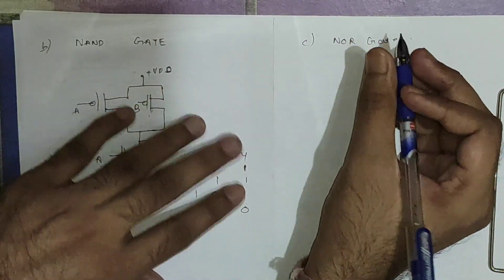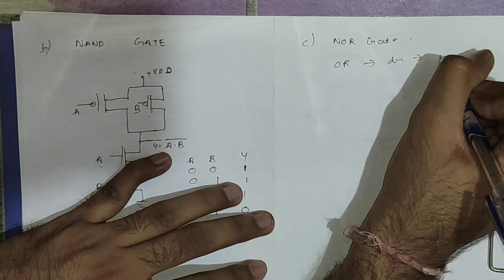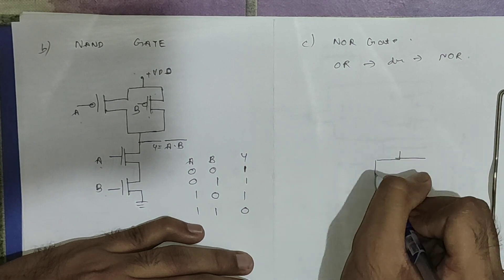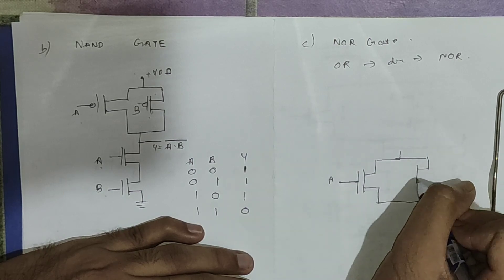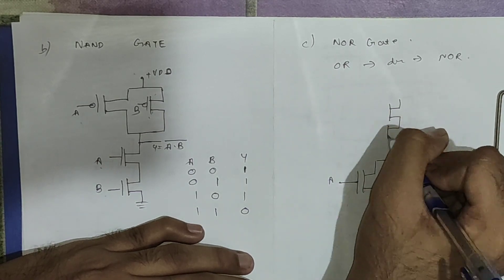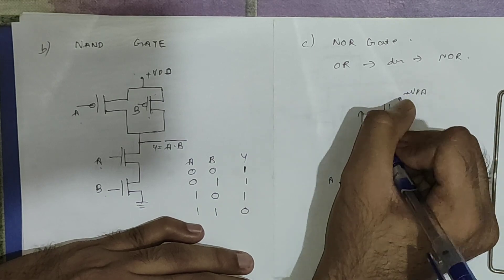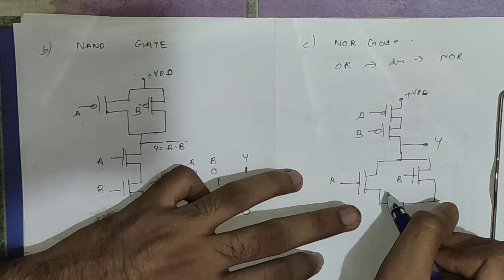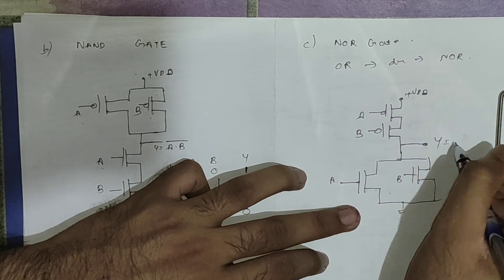Now if we have to build a NOR gate, we first make an OR gate then take output from the drain to get the NOR gate output. We focus on NMOS only. For the OR gate we place two NMOS branches in parallel — this will be A and this will be B. The PMOS will be the complement of NMOS, so both PMOS will be in series connected to +VDD. Taking output from this terminal gives the complement of A+B, so output is (A+B) bar.